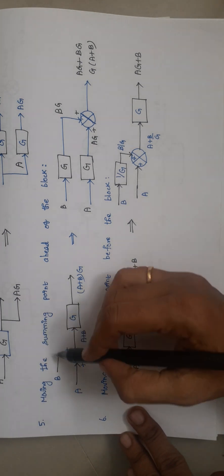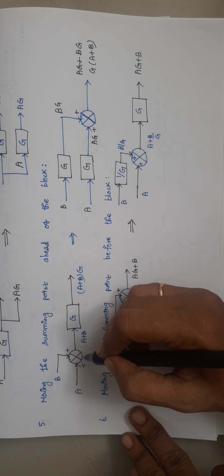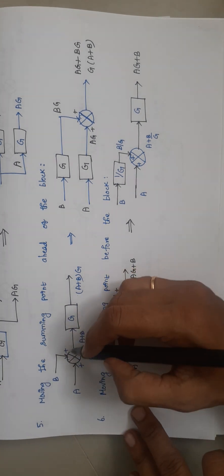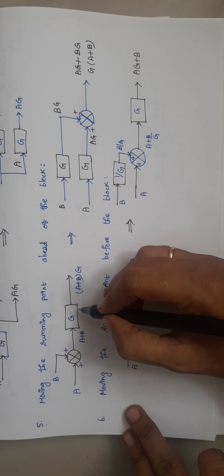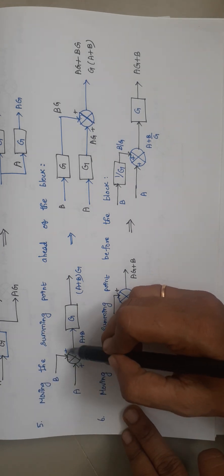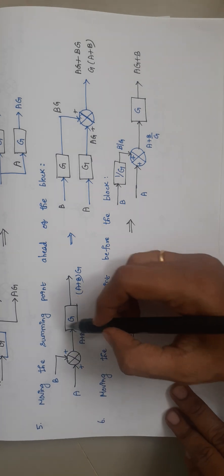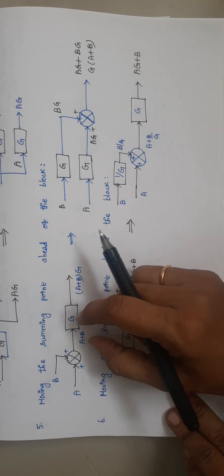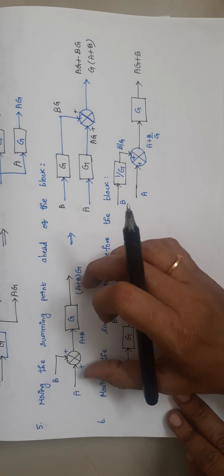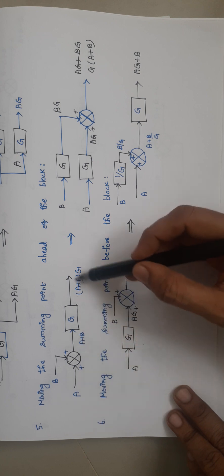The next rule is moving the summing point ahead of the block. A summing point must have more than one input — elements to be added or subtracted. Here the summing point has two inputs: A and B, both with positive signs, so A + B is passed as input to block G. Multiplying gives (A + B)·G as the output. Now I am going to move this summing point ahead of the block.